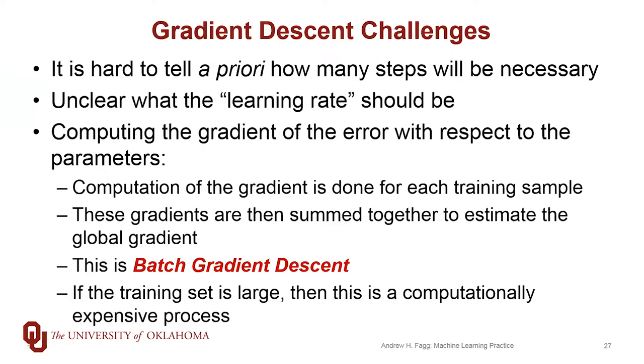If the training set is small, then that's easy to do. But as that training set starts to get much larger, then this process of estimating the gradient in this way can actually get quite large. However, it is linear in the size of our training set.